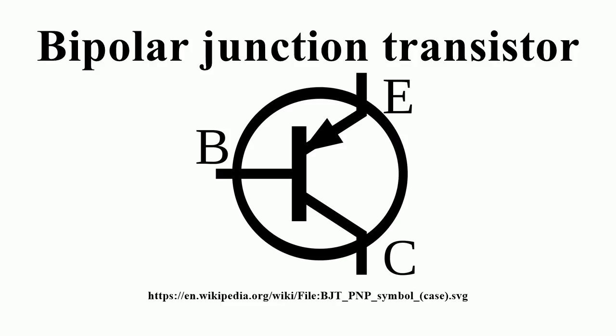The collector-emitter current can be viewed as being controlled by the base-emitter current, or by the base-emitter voltage. These views are related by the current-voltage relation of the base-emitter junction, which is just the usual exponential current-voltage curve of a PN junction.